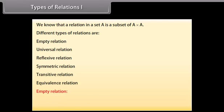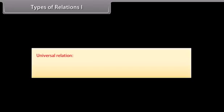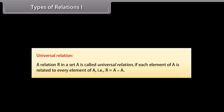Empty relation: A relation R in a set A is called empty relation if no element of A is related to any element of A. That is, R is a subset of A cross A. Universal relation: A relation R in a set A is called universal relation if each element of A is related to every element of A. That is, R is equal to A cross A.